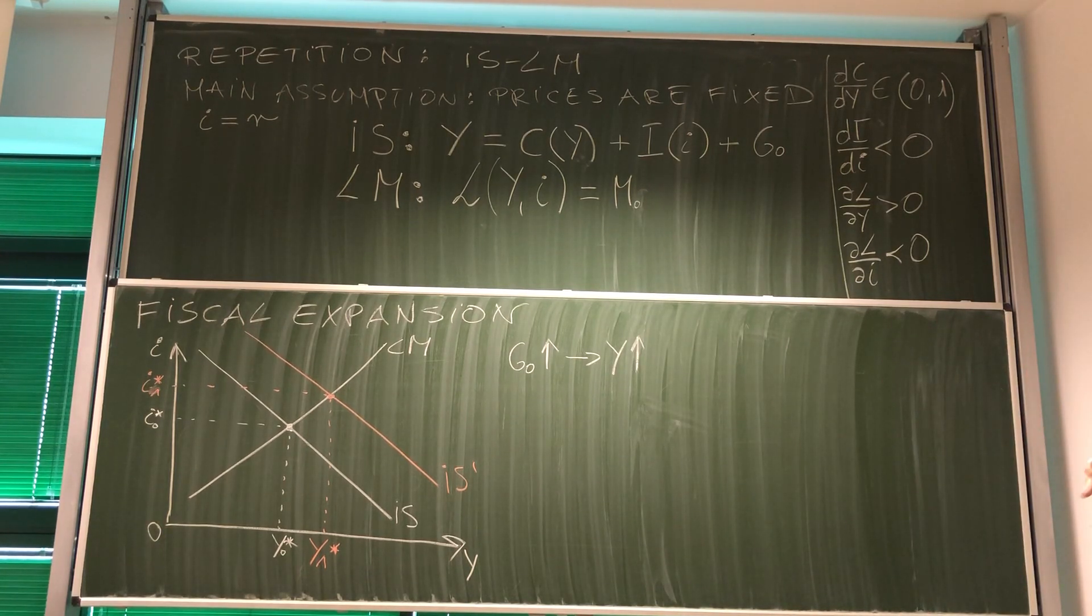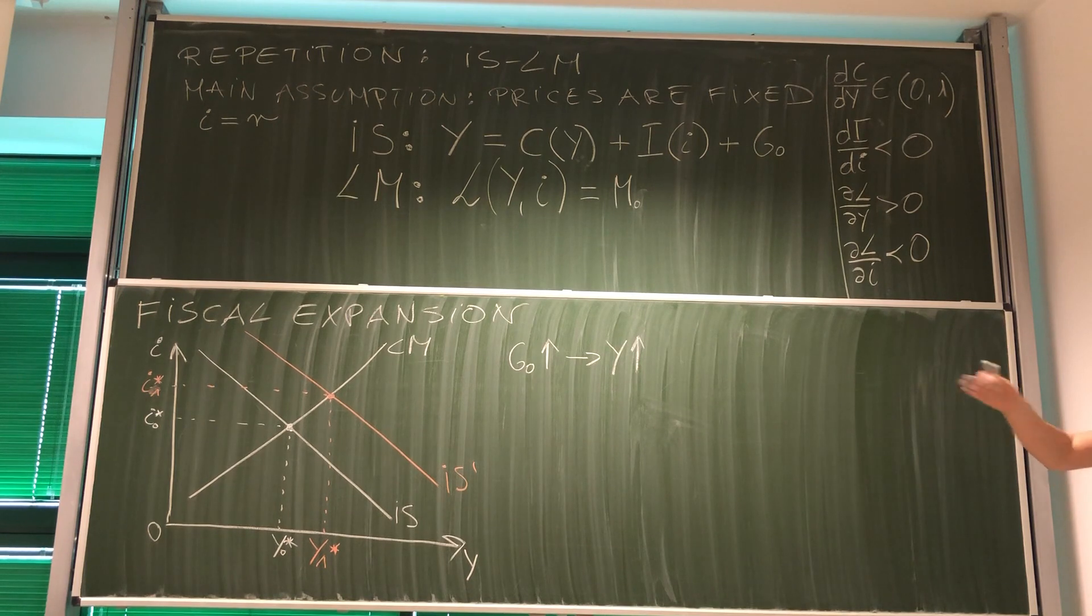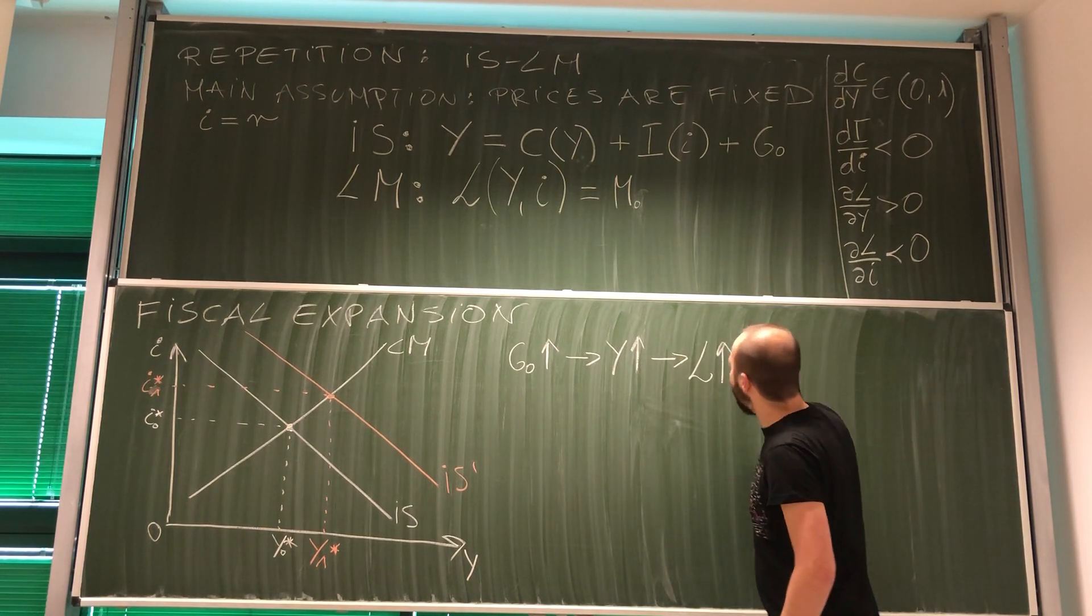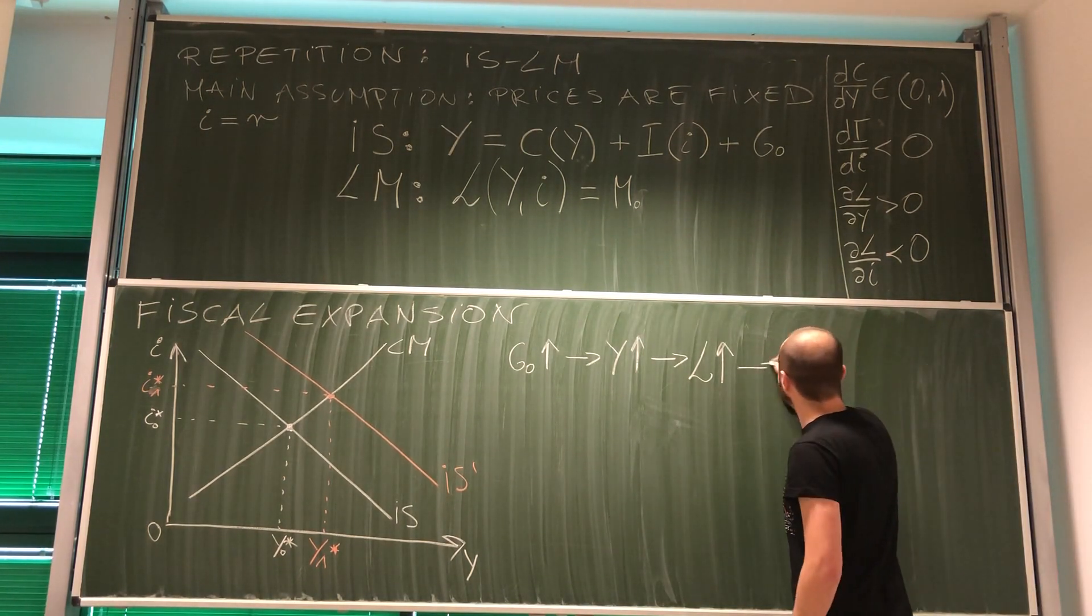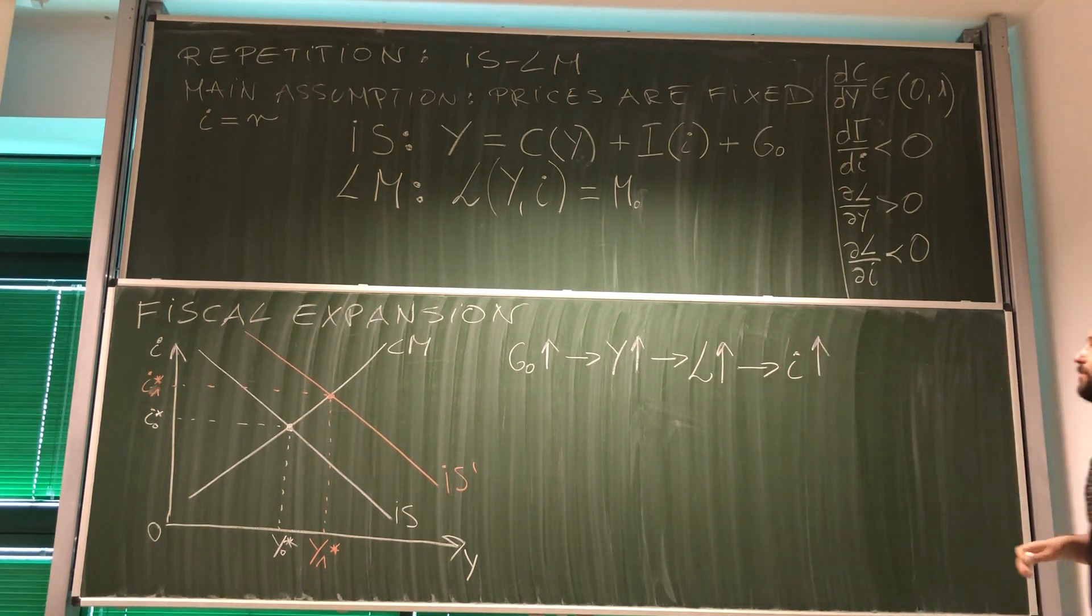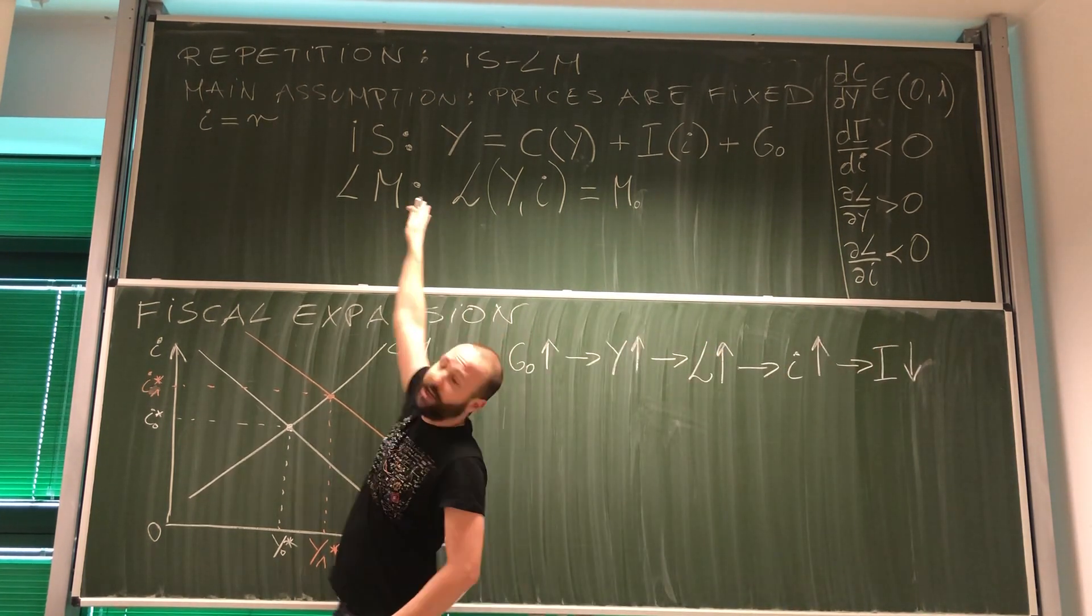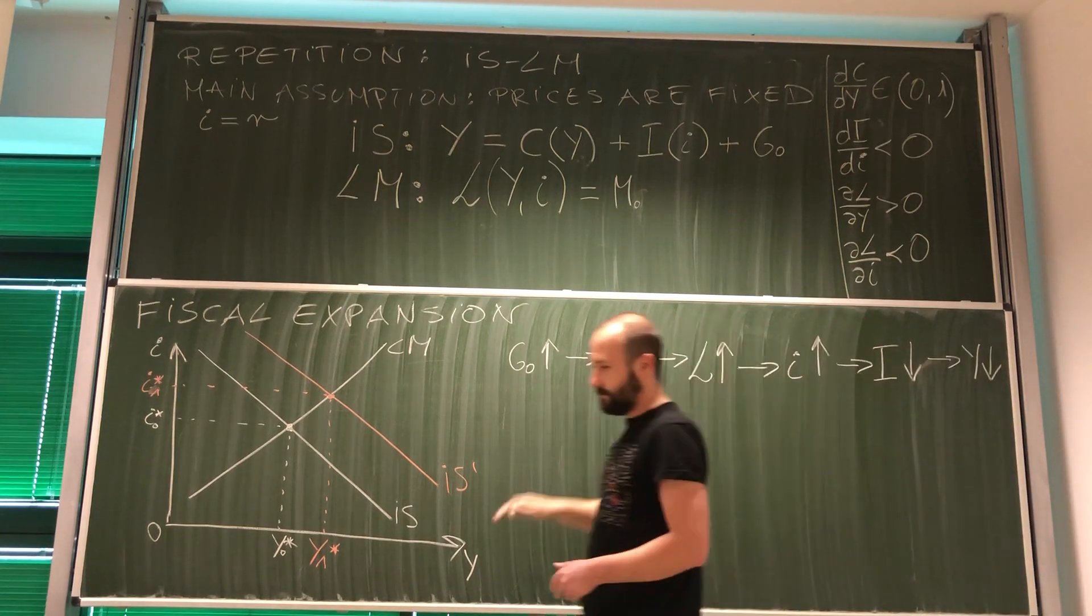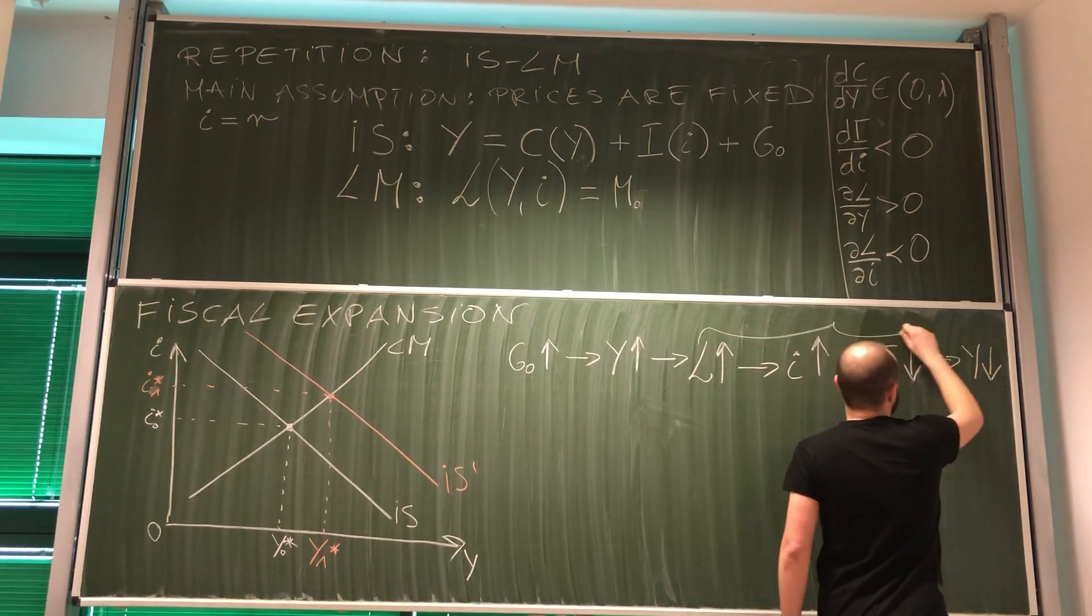But the more interesting question is why is this happening? When government spending goes up, then aggregated expenditures go up. Because aggregated expenditures are equal to income, income must go up. So this is what happens initially in the market for goods and services. But then we haven't included what happens in money market. What do we see? That if income increases, money demand increases. If money demand increases, assuming constant money supply, we expect the interest rate will go up. And this has further consequences. Higher interest rate means lower investment. As investments are part of aggregated expenditures, it means lower GDP.